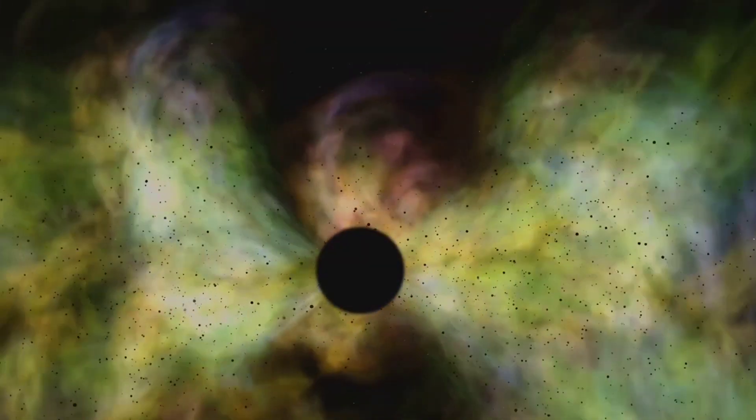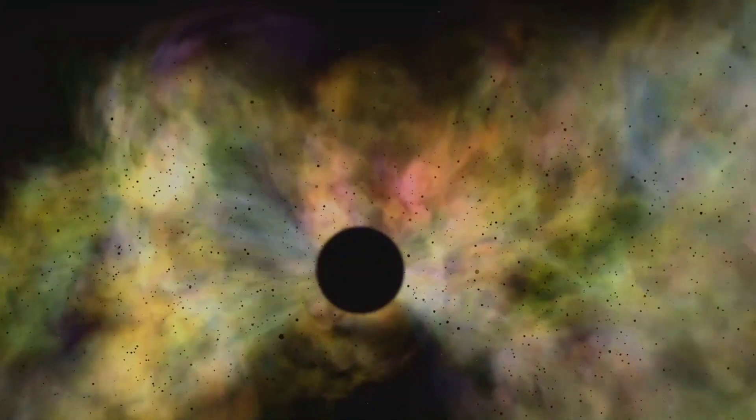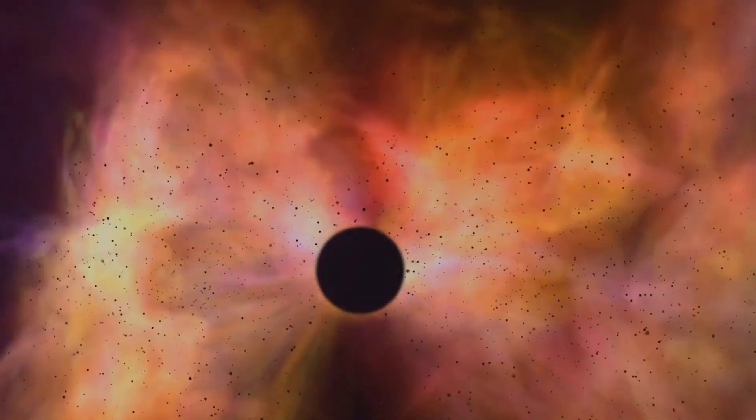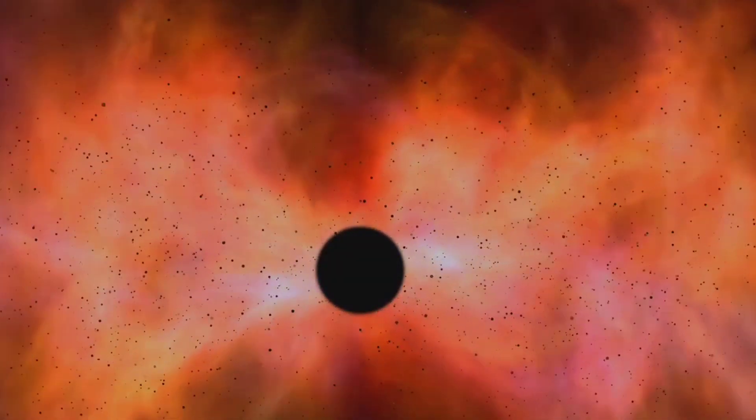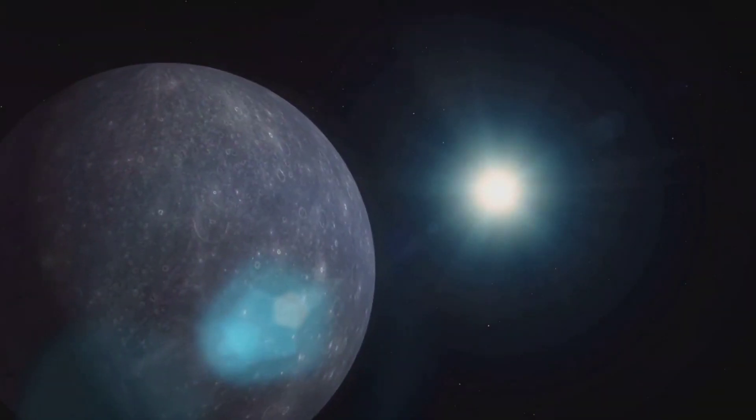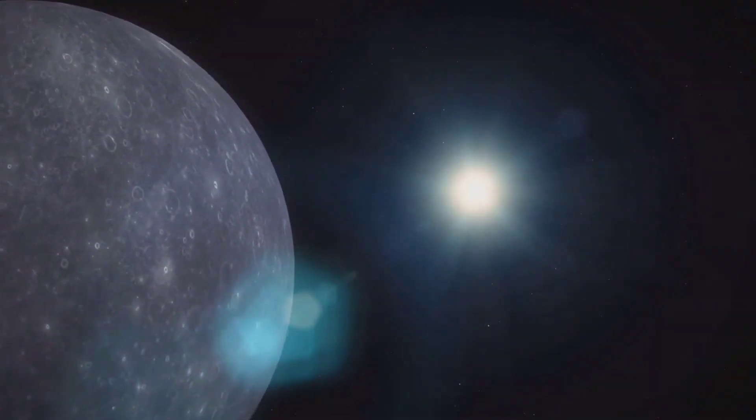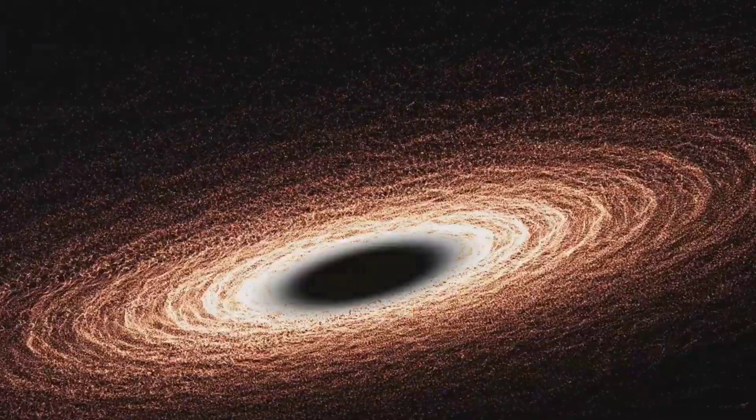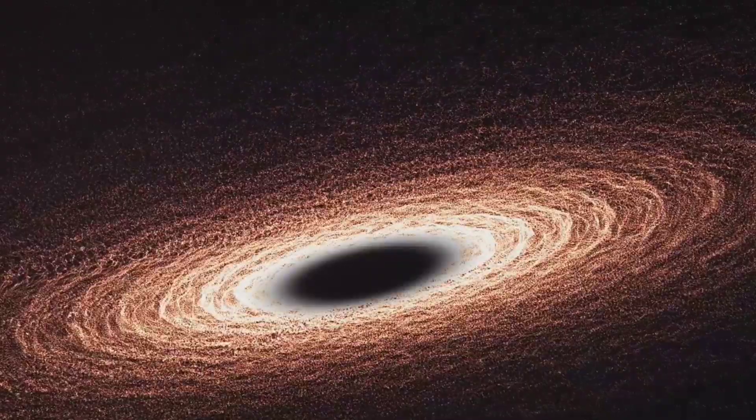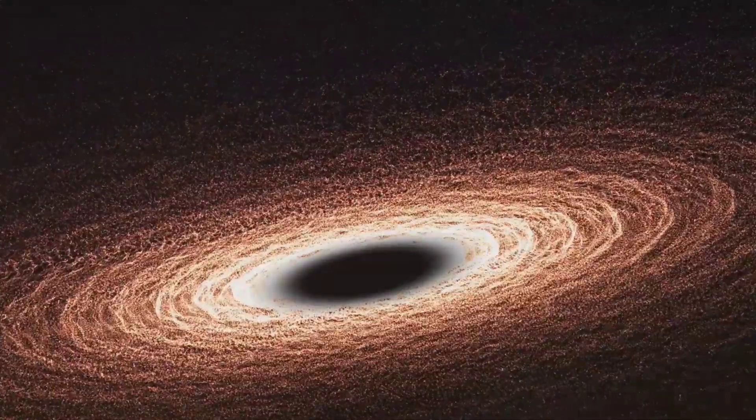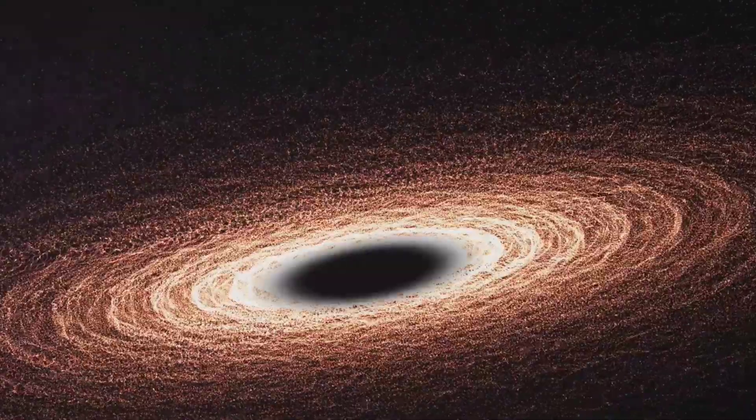As the universe expanded and cooled, WIMPs spread out but did not annihilate each other, leading to their persistence in the cosmos. Billions of WIMPs are estimated to pass through Earth and its inhabitants every second. While most pass through unhindered, occasional collisions occur, resulting in the transfer of energy to the nuclei in our bodies.